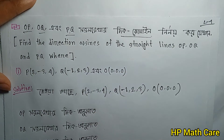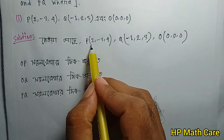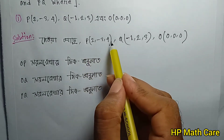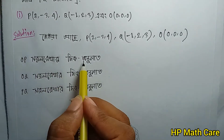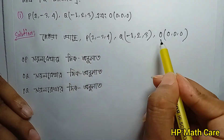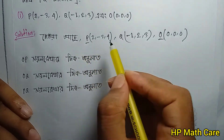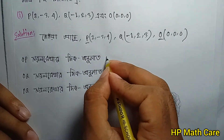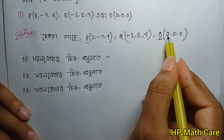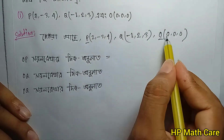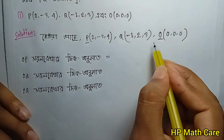I'm ready to say: P in the doorway is (2,-3,4), Q is (-1,2,3). For OP, the direction cosine — let me give O as (0,0,0). So OP: we write 2 minus 0, which gives 2.